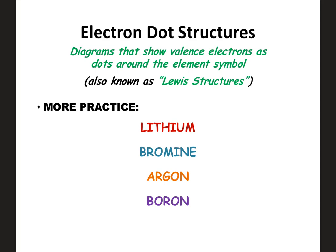Here are the electron dot structures for the four practice elements. Remember, it doesn't necessarily matter which side you place the electrons on. For boron, for example, you might have an electron on one side but not another — that's fine, as long as you have one on each occupied side. The maximum number of valence electrons you can have is eight, so if you're drawing more than eight dots, you know something is wrong. Electron dot structures are pretty easy, but you have to be able to determine the number of valence electrons.